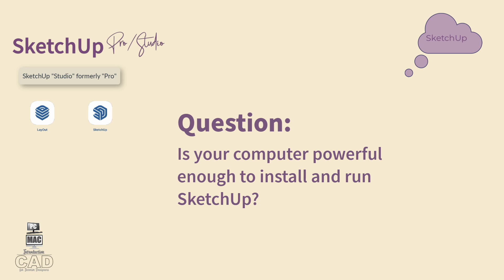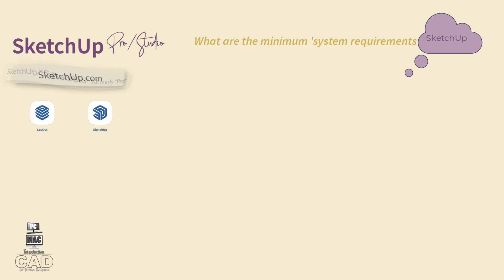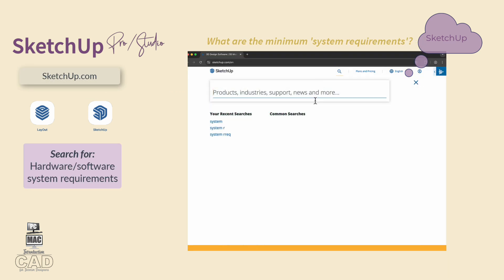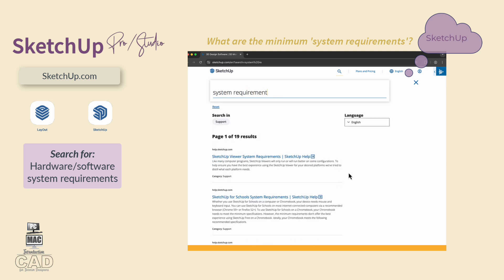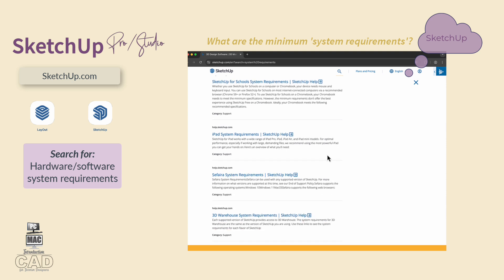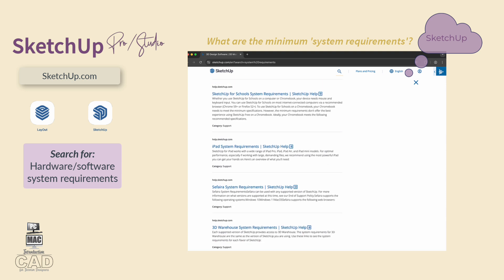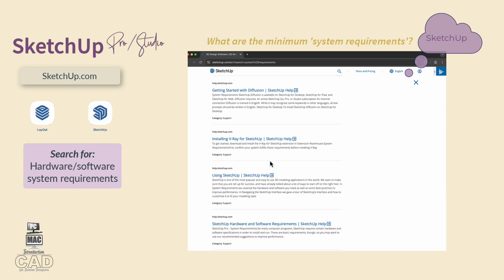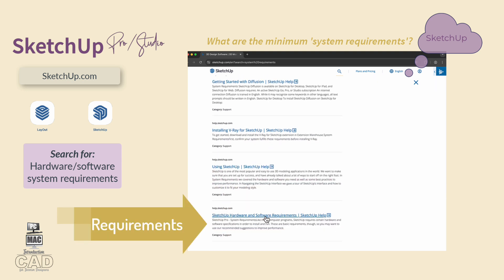Always check your computer system requirements to ensure that your computer can handle the SketchUp Pro application installation. Minimum system requirements means: does your computer have enough memory and processing power to run SketchUp efficiently? To find out this information, go to SketchUp.com and type in the search finder System Requirements. From the search results, you'll find three main subjects of interest to investigate — what does SketchUp recommend for computer resources to run the software?